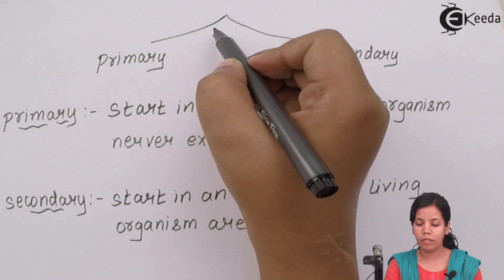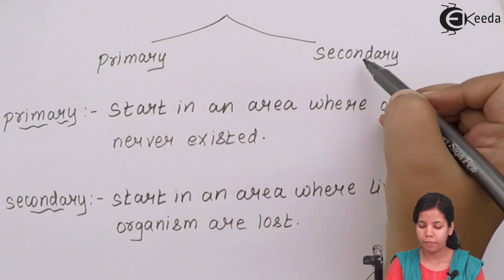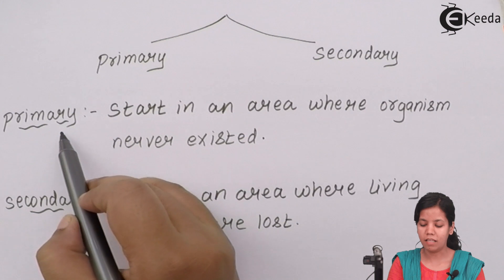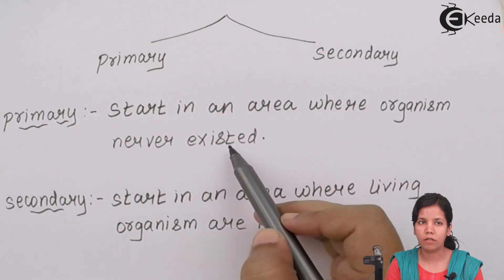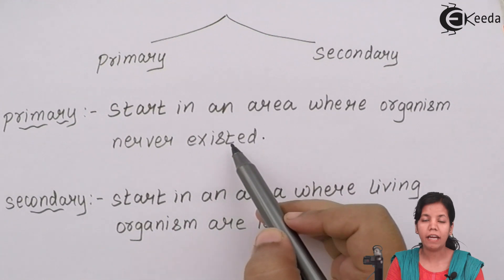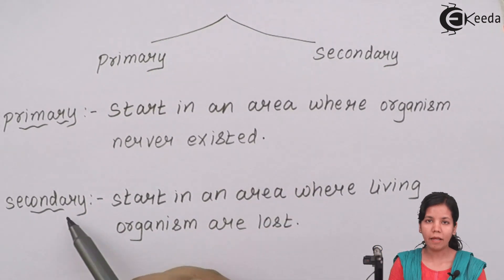Ecological succession can be of two types, primary, the initial one or secondary. Primary succession is nothing but start in an area where organisms never existed. It could be a desertic area, it could be an area where earth formed initially, the first time trees came on earth.